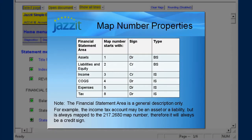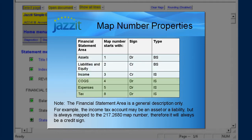Then check the signs in the Caseware working trial balance. Verify that all maps starting with 1 are a debit, 2 are a credit, 3 are a credit, and 4, 5, and 8 are debit in the sign column.